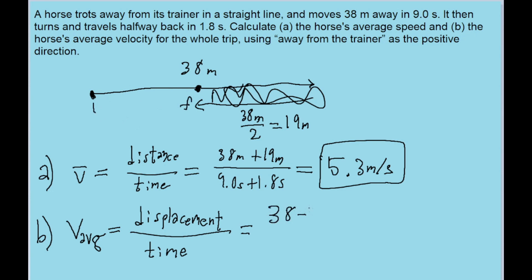So for the displacement, we would actually be subtracting the 19 meters rather than adding them. But the time is still the same. It's still the same amount of time, 9.0 seconds plus 1.8 seconds. And if we put that into our calculator, then we find an average velocity of 1.8 meters per second.